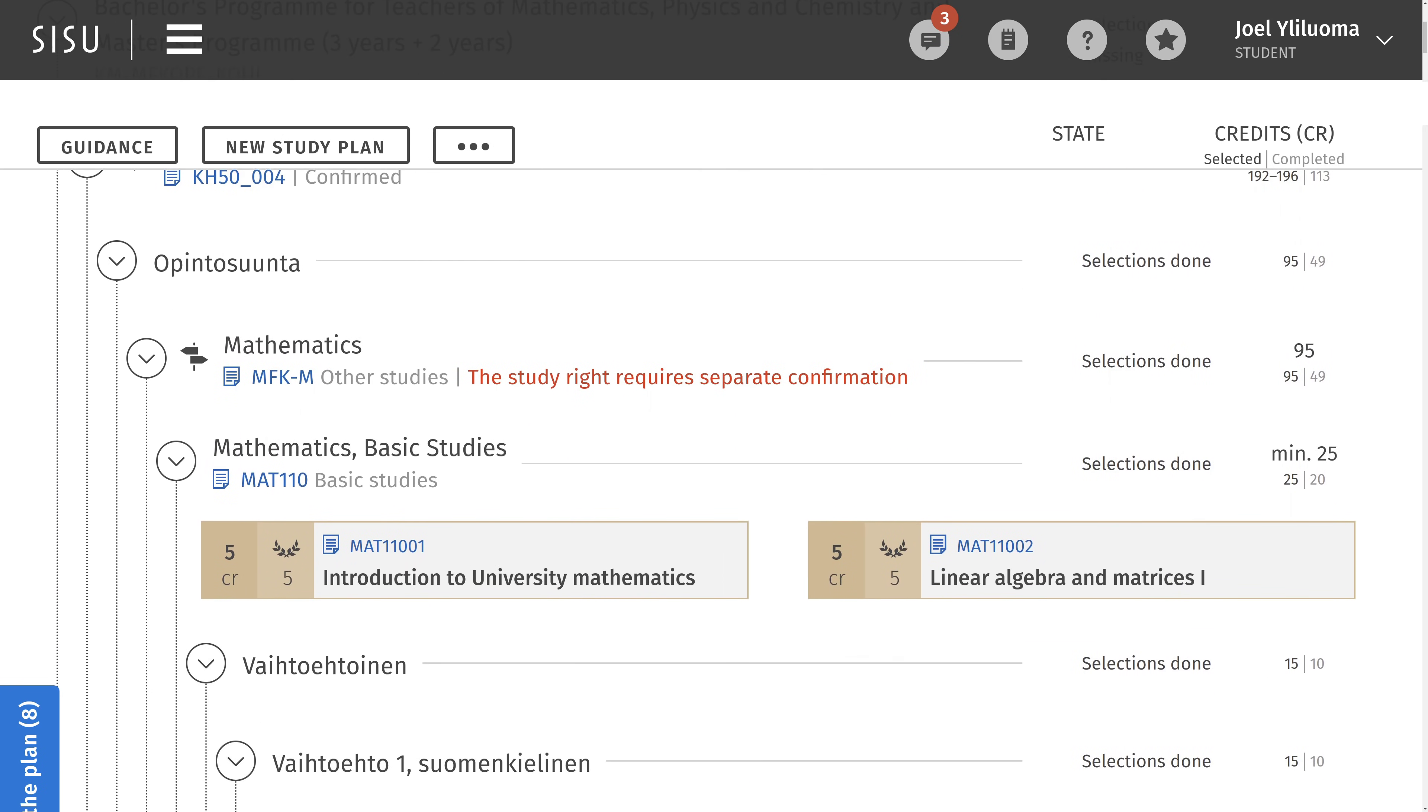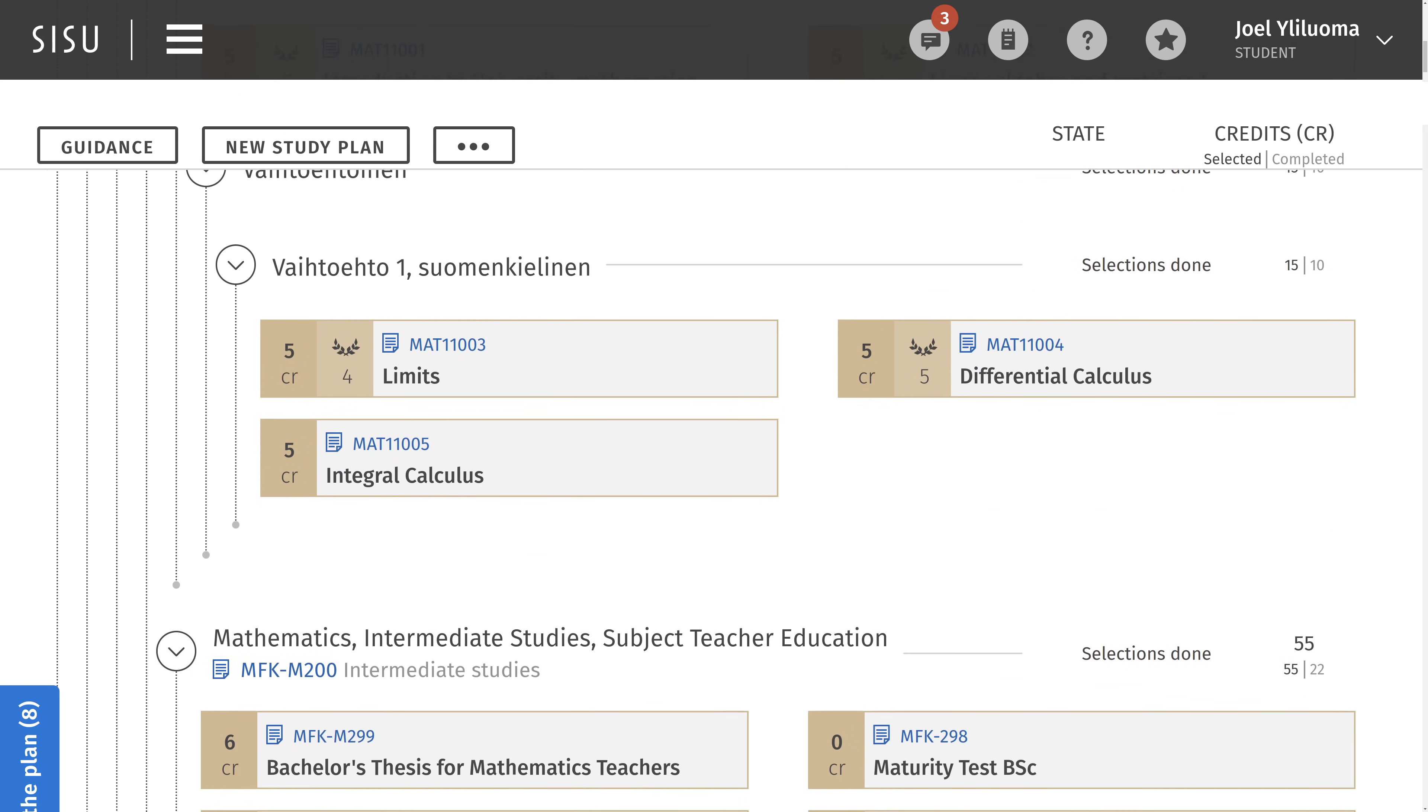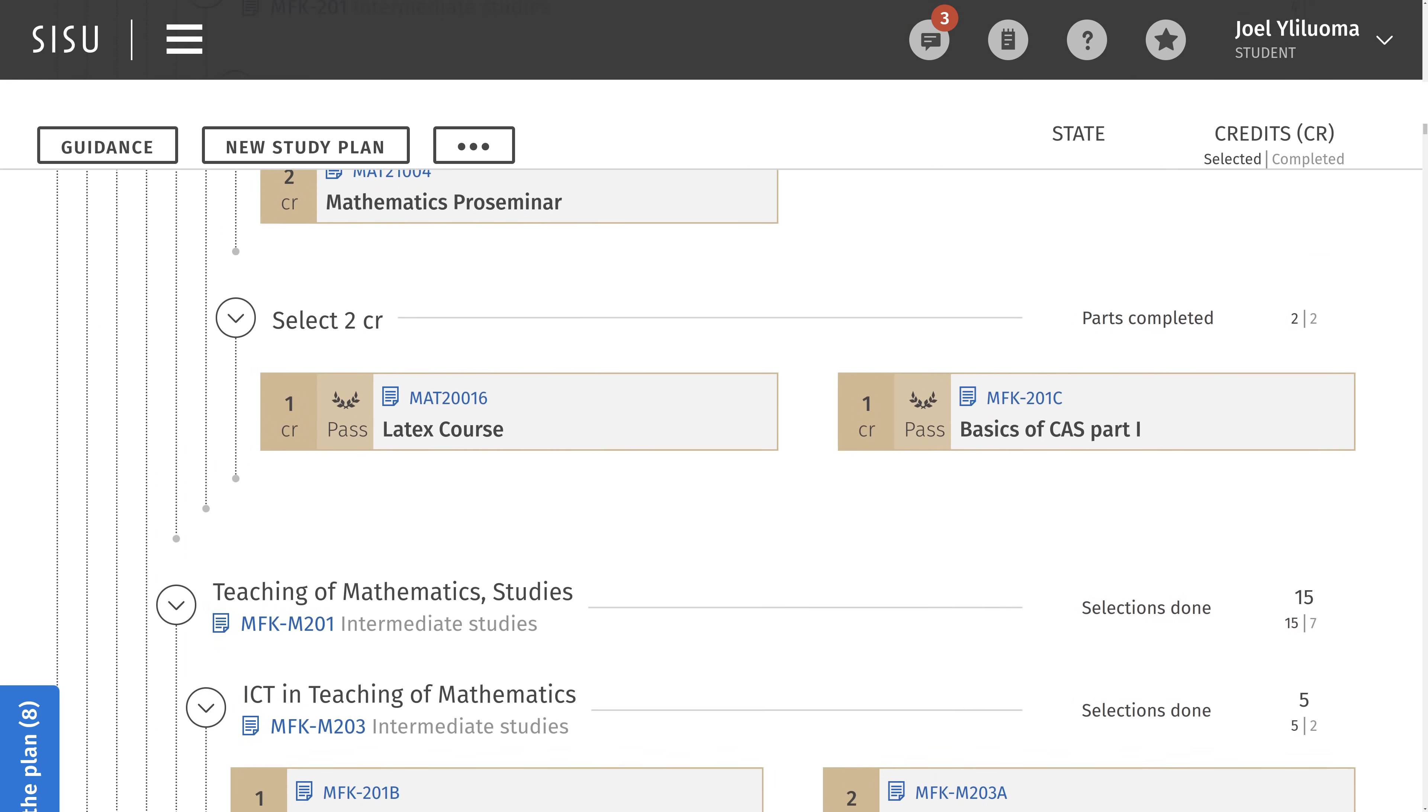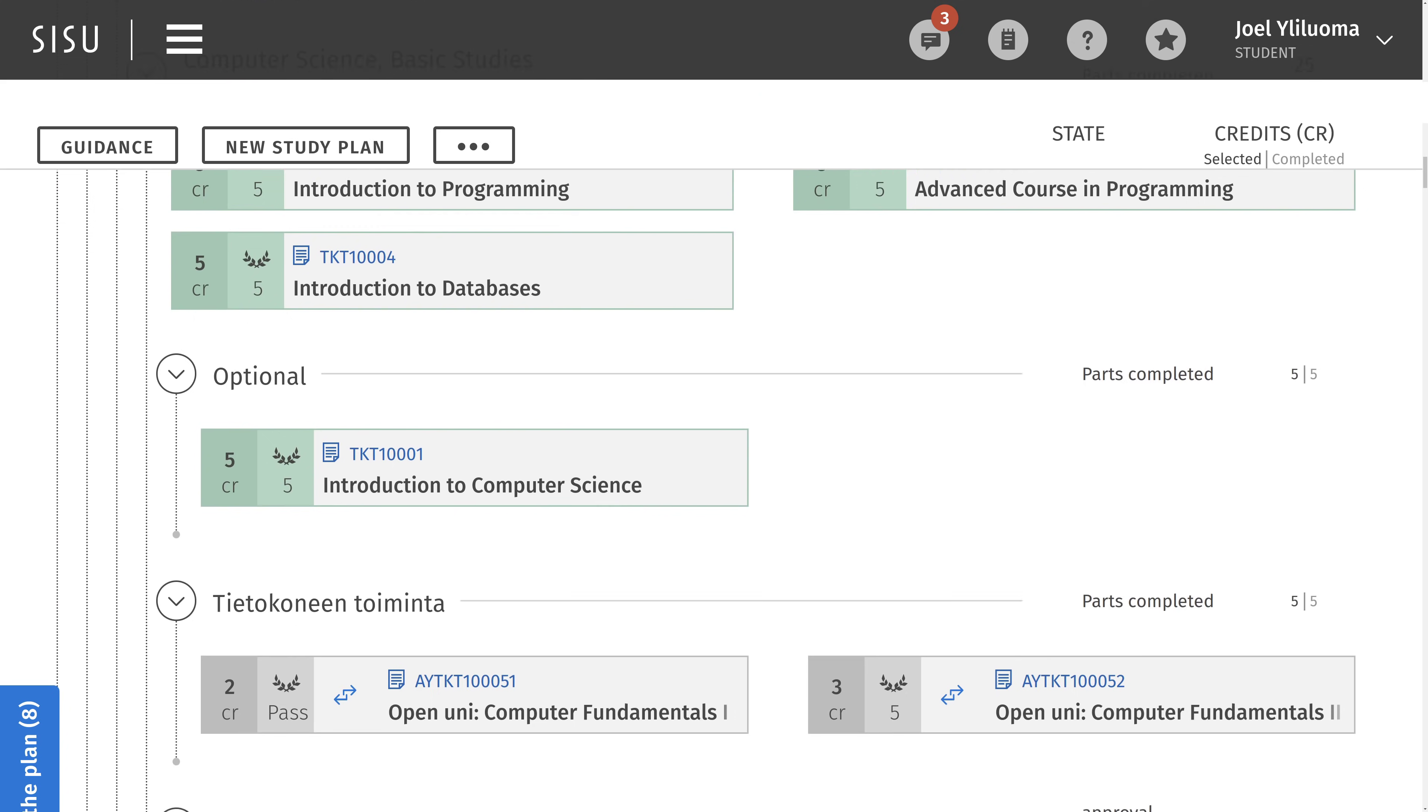When I went to university and began planning my studies, I chose some courses specifically because I thought there would be easy credits, and you need study credits to get a degree.